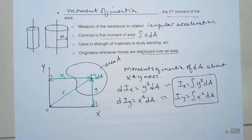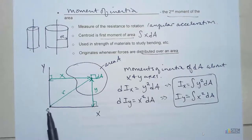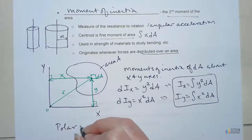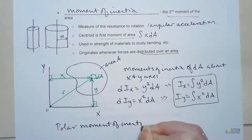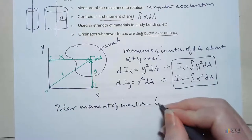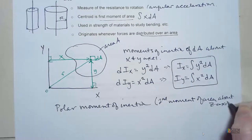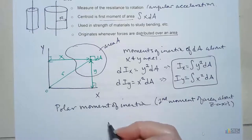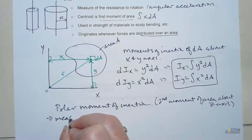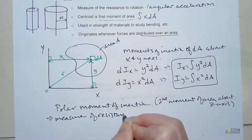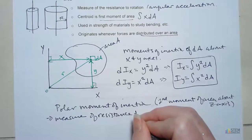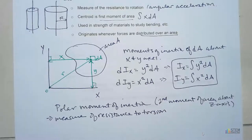There are your equations. This only gives us for x and y. There's also a third axis, which is the z-axis coming out of the page, through this point O. The moment of inertia about that axis is called the polar moment of inertia — that's just your second moment of area about the z-axis. This moment of inertia gives you a measure of the resistance to twisting or torsion. Torsion is something you'll talk about in mechanics of materials — it's kind of like a twisting motion. Think about if you have a towel and you twist each end — that's a twisting motion.